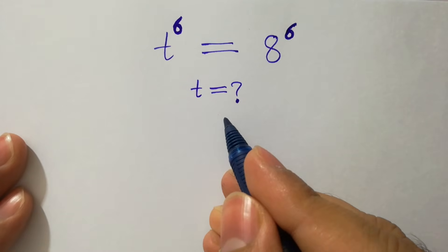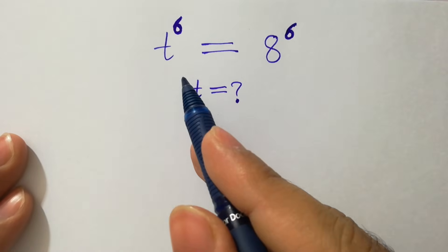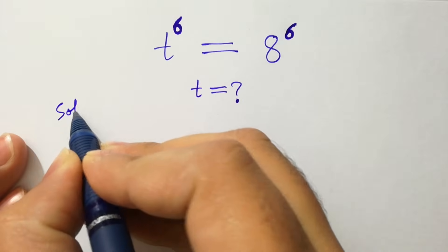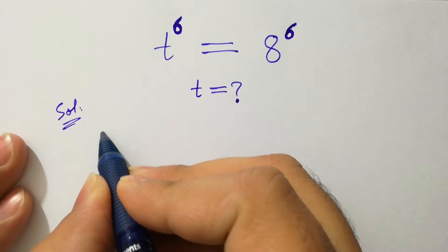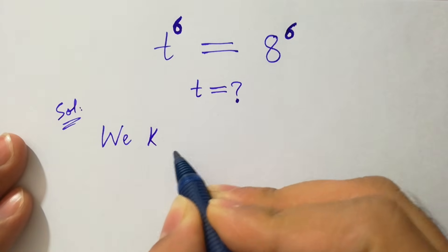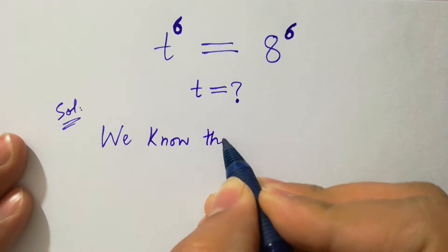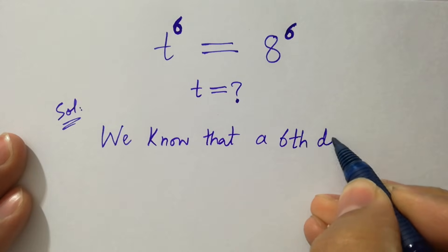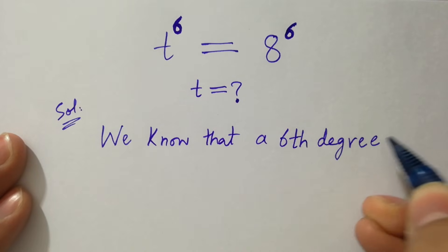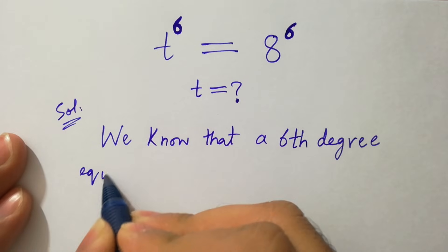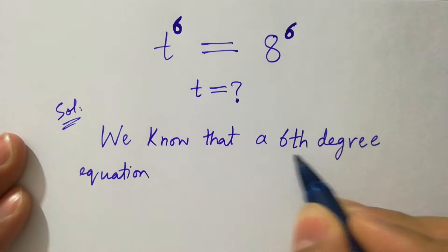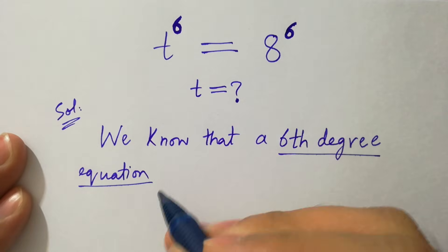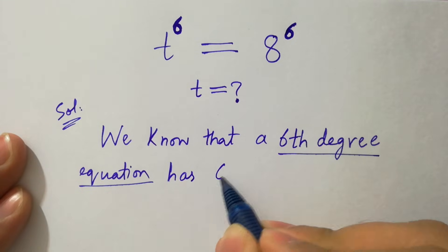Hello friends. Find the value of t if t to the power 6 equals 8 to the power 6. Let's have a solution. We know that a 6th degree equation, which you can see t to the power 6 equal to 8 to the power 6, has 6 solutions.